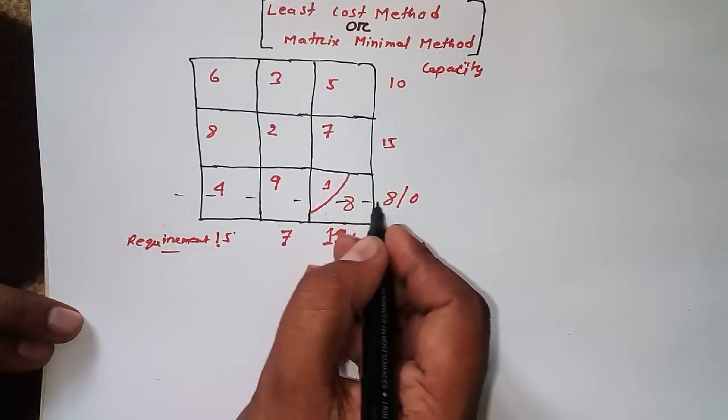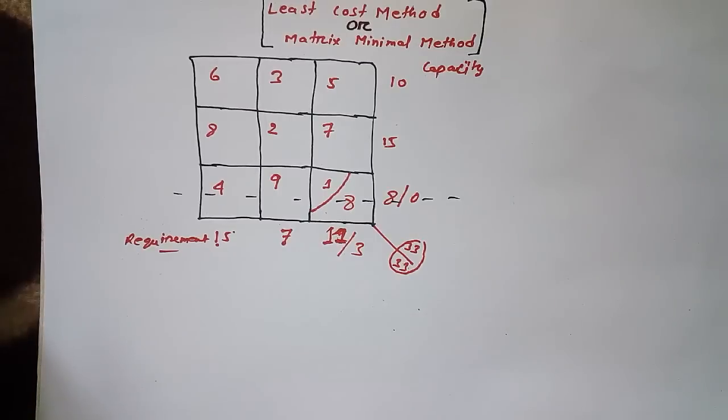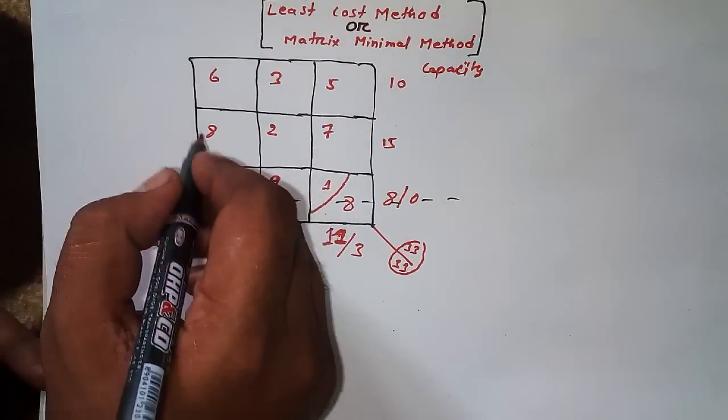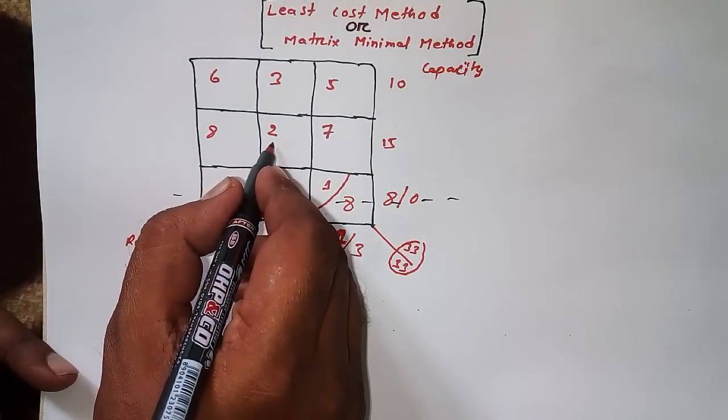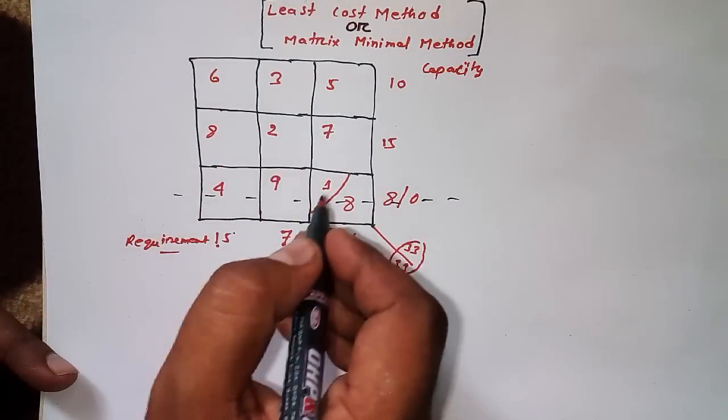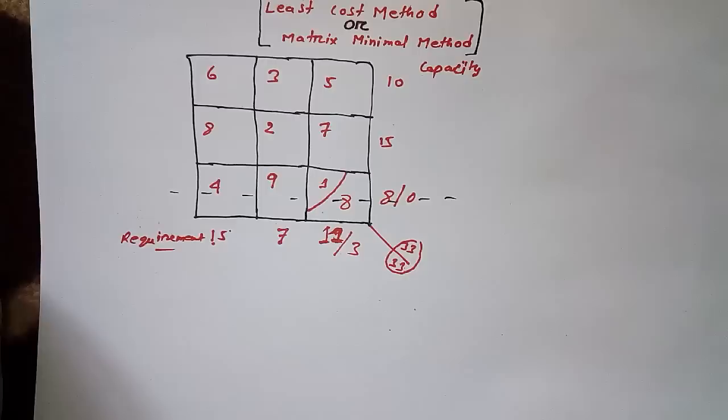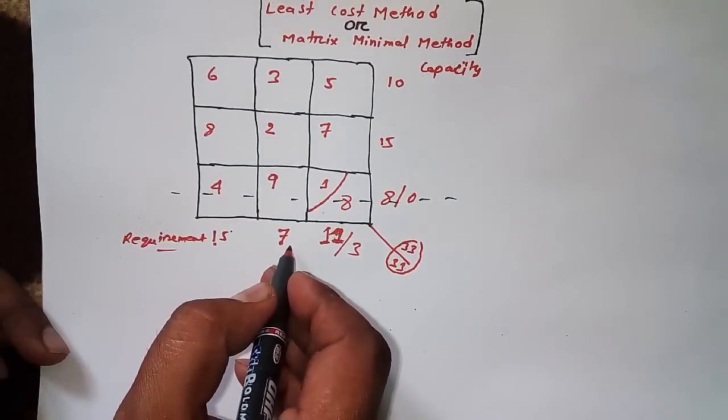Now I have to look at the other two rows. The minimum number is 2. I need to check requirement and capacity. The requirement is 7 and capacity is 15, so we can keep the whole capacity.